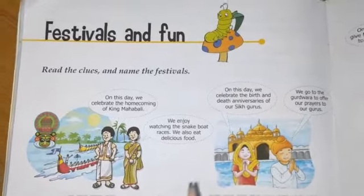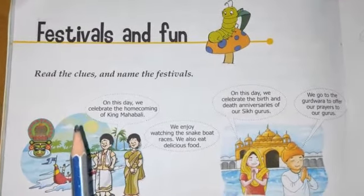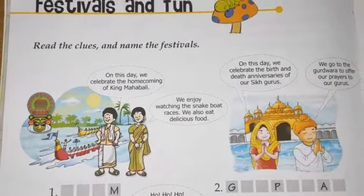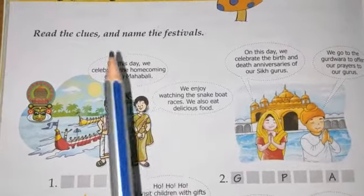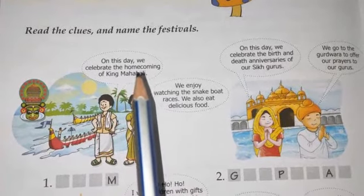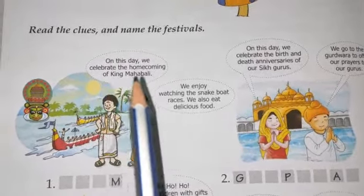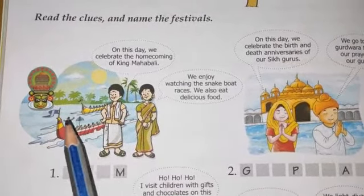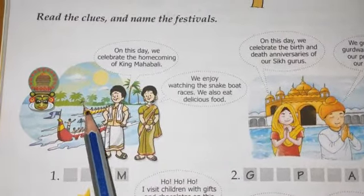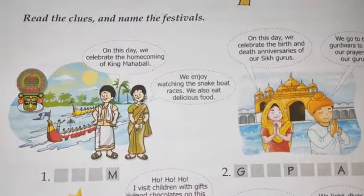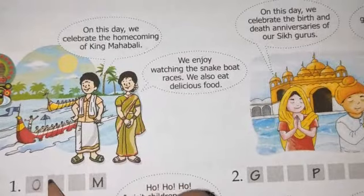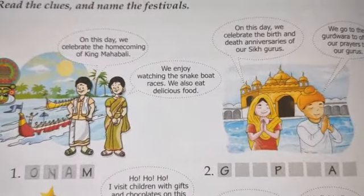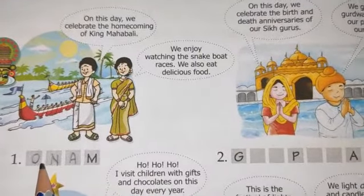Let us see what is given in the book. Open to page number 36 under the heading 'Festivals and Fun.' Read the clues and name the festival. First clue: on this day we celebrate the homecoming of King Mahabali; we enjoy watching the snake boat races and eat delicious food. You can see a boat race being performed — boat races are done in the festival Onam, celebrated in Kerala, which celebrates the homecoming of King Mahabali, who blesses the yield of crops every year. The festival is Onam — O-N-A-M.